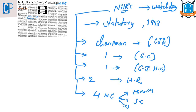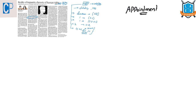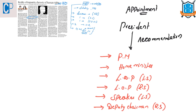Along with these, the chairpersons of four national commissions — Minorities Commission, Scheduled Castes Commission, Scheduled Tribes Commission, and Women's Commission — serve as ex-officio members of the NHRC. The Chairman and members are appointed by the President of India based on recommendations of a committee consisting of the Prime Minister as chairman, the Home Minister, the Leader of Opposition from Lok Sabha, the Leader of Opposition in Rajya Sabha, the Speaker of Lok Sabha, and the Deputy Chairman of Rajya Sabha.